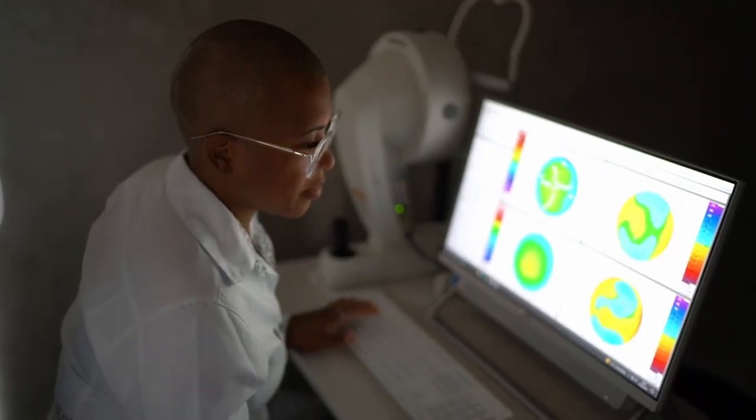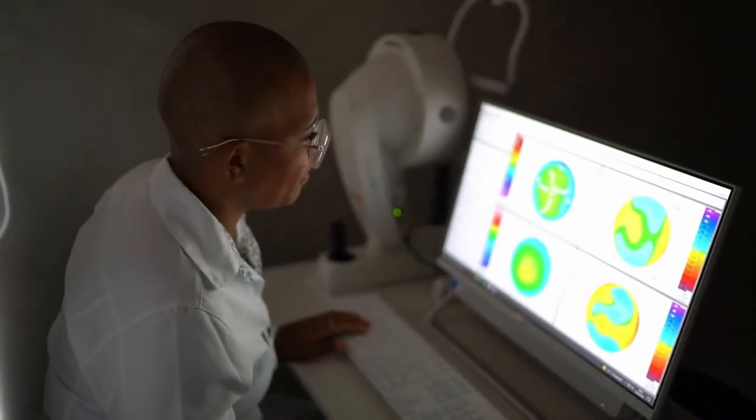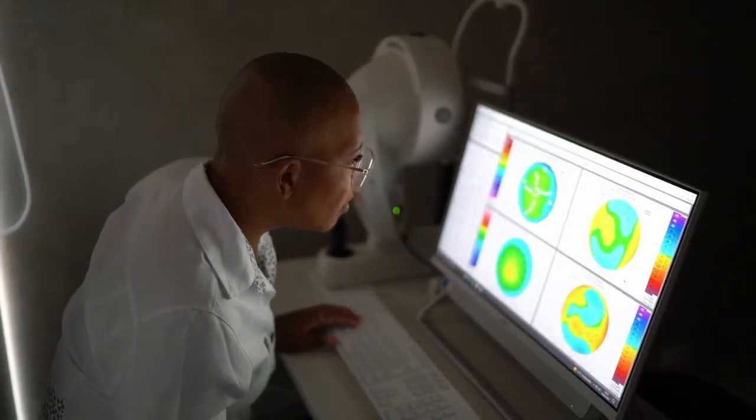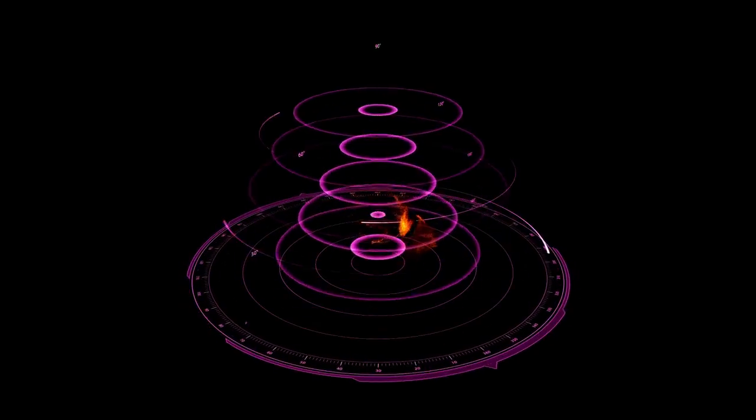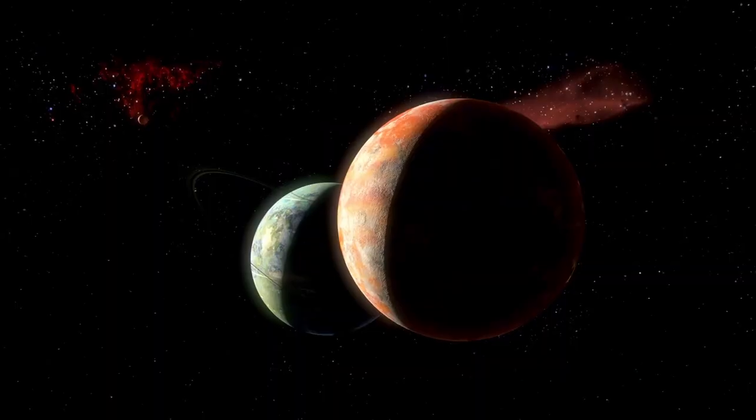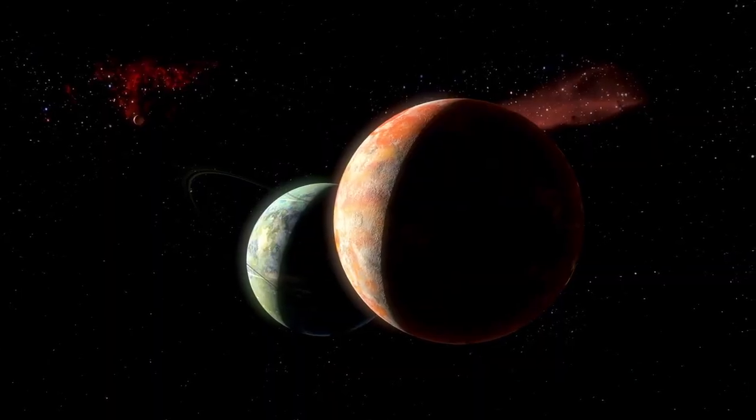Redshift is supposed to increase with distance, marking older light. But here, the farther the galaxy, the younger the light appeared. This suggested a break in the linear flow of time itself. Some call it a time-fold, like a crease in spacetime where events get replayed out of order.